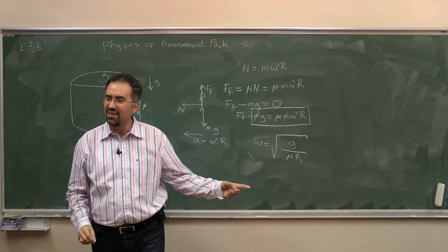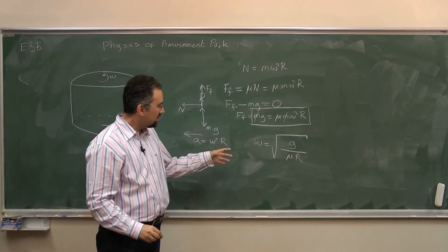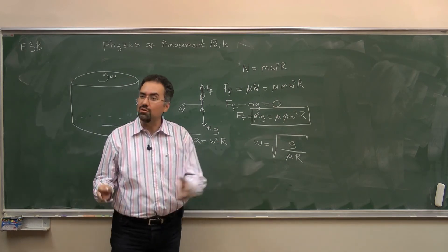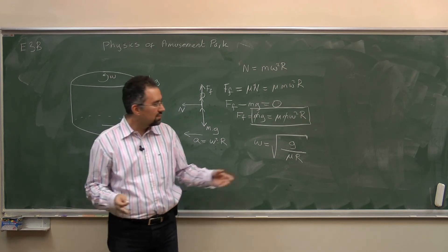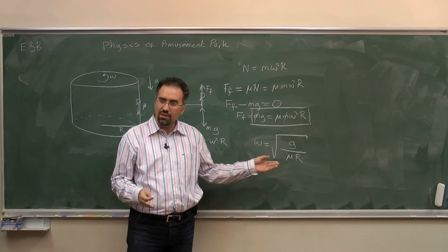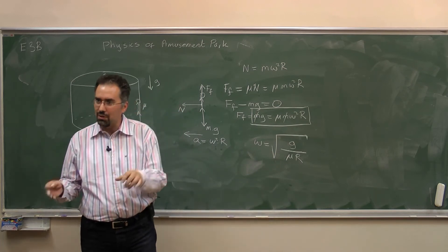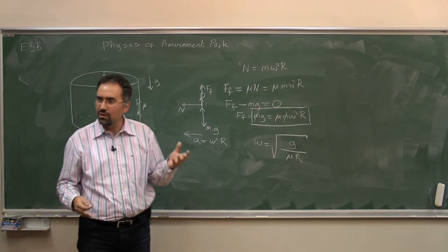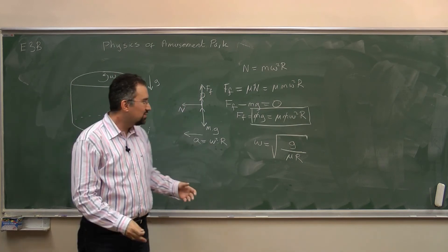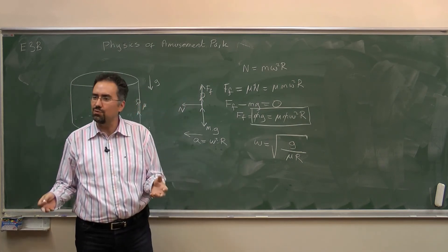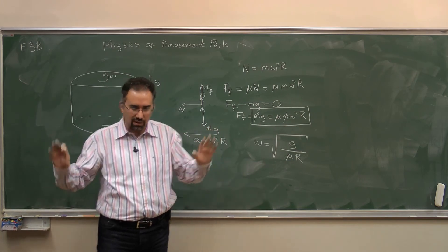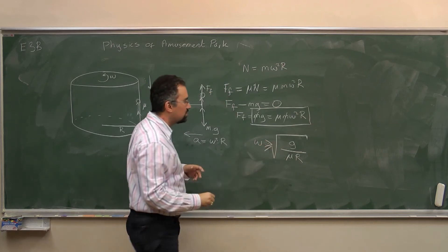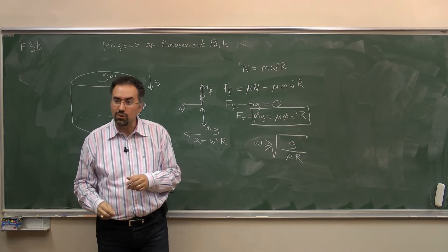Are the units right? Does it make sense? I found an equality for the limiting case, so now is it greater than or less than? If omega equals zero, everybody falls down like a rock. So you want omega to be larger than that value. If you turn fast enough, people get stuck on the wall. So the condition is omega must be greater than or equal to the square root of g over (mu r).